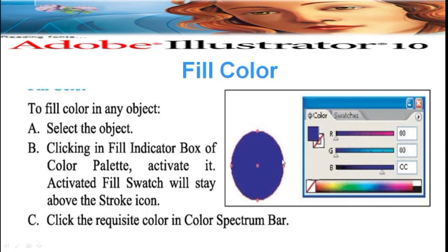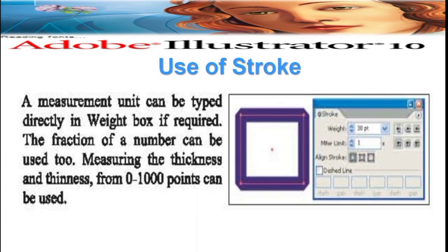Fill color: to fill an object with color, select the object — for example, a circle. The fill indicator box and the color palette are shown on the right side. Select the blue color; the color swatch will stay above the stroke icon. Click the required color in the color spectrum bar. For stroke, a measurement unit can be typed directly in the white box; stroke thickness ranges from 0 to 1000 points.